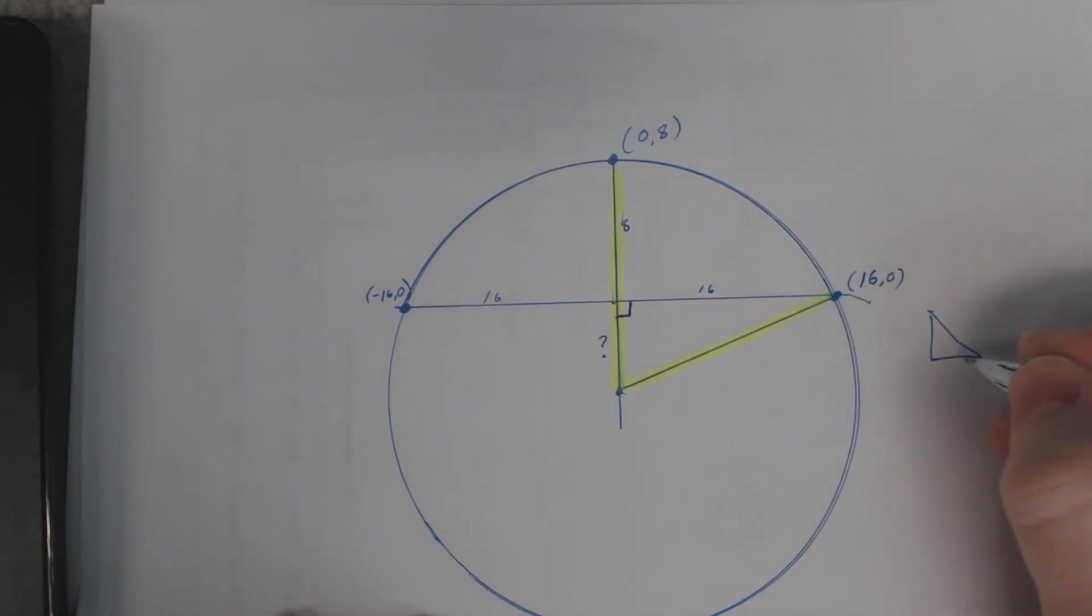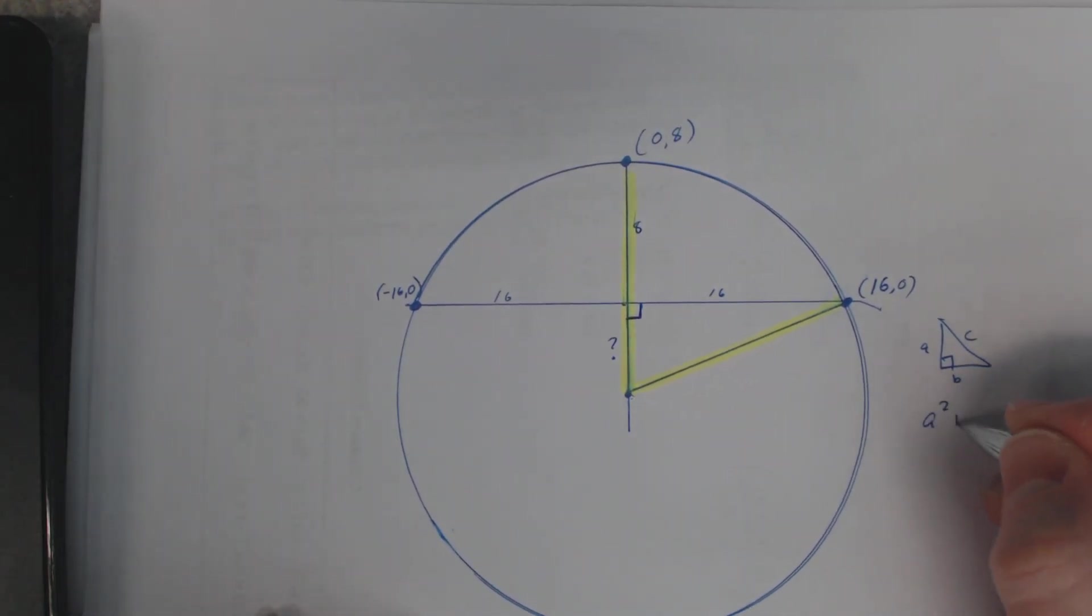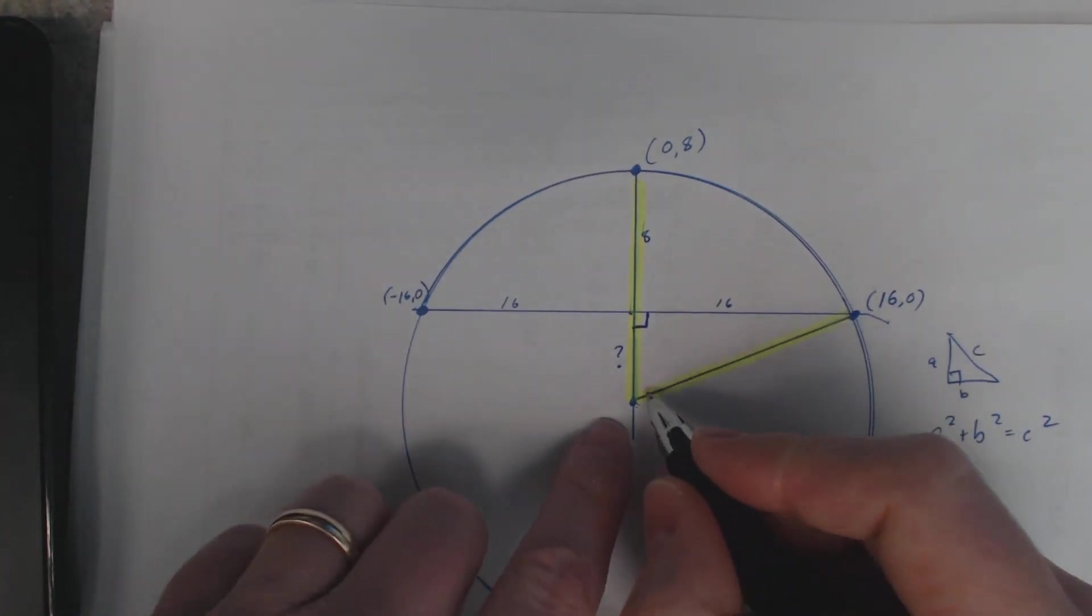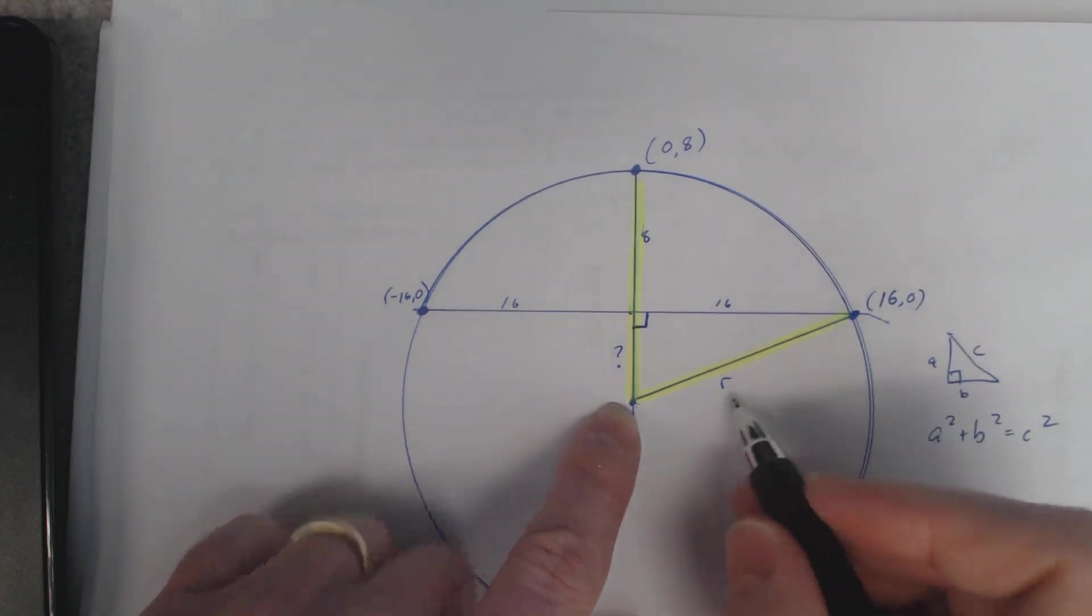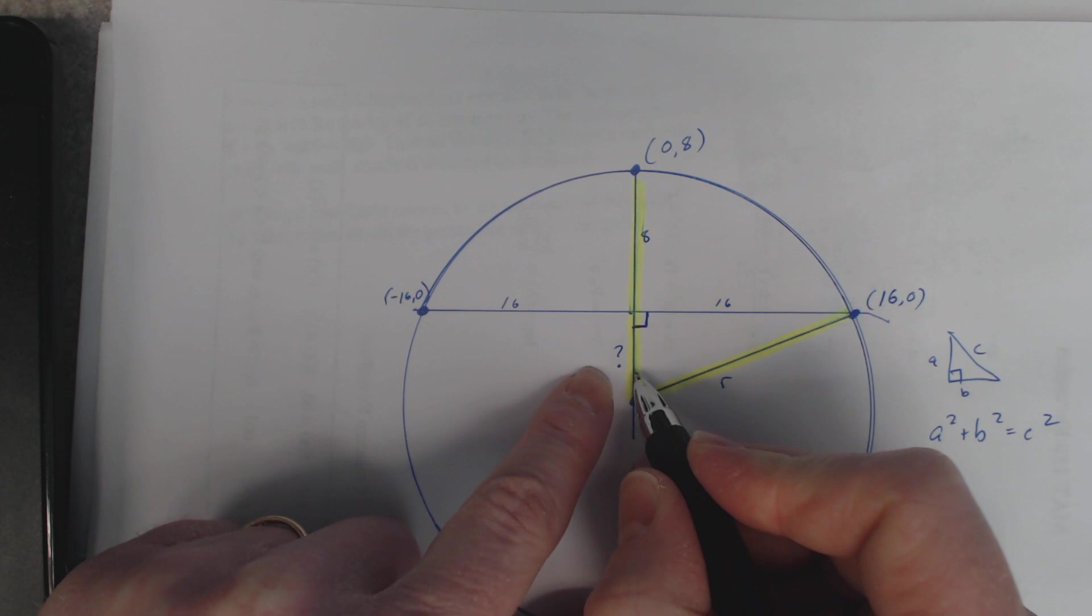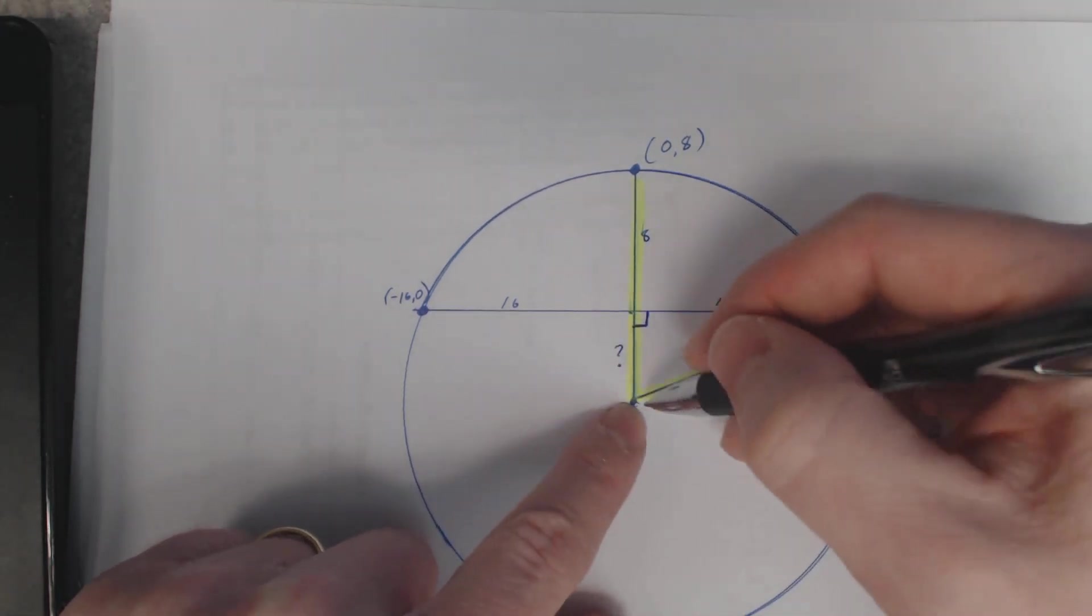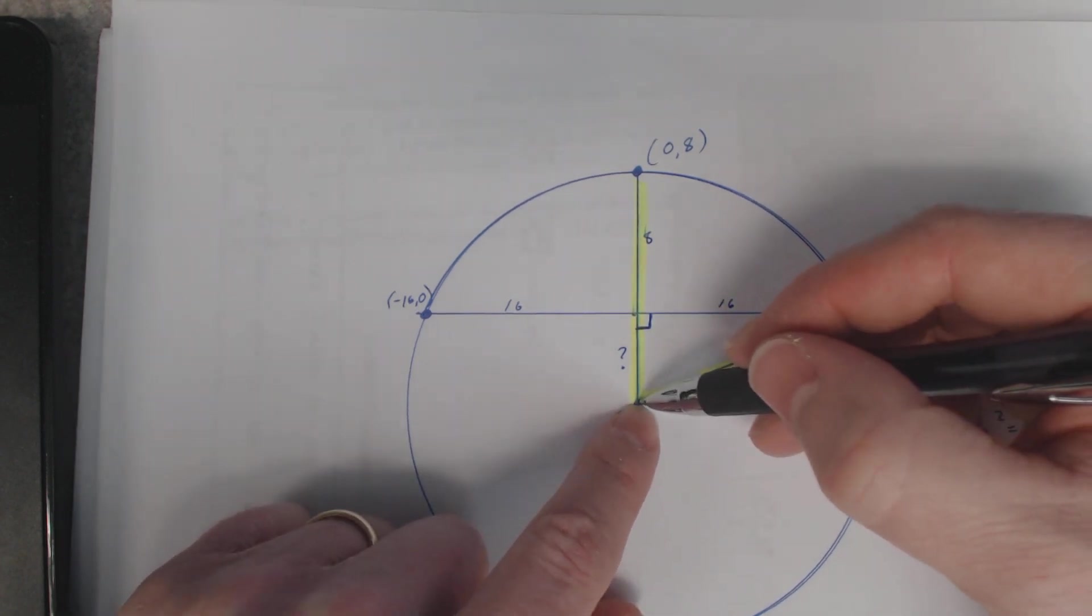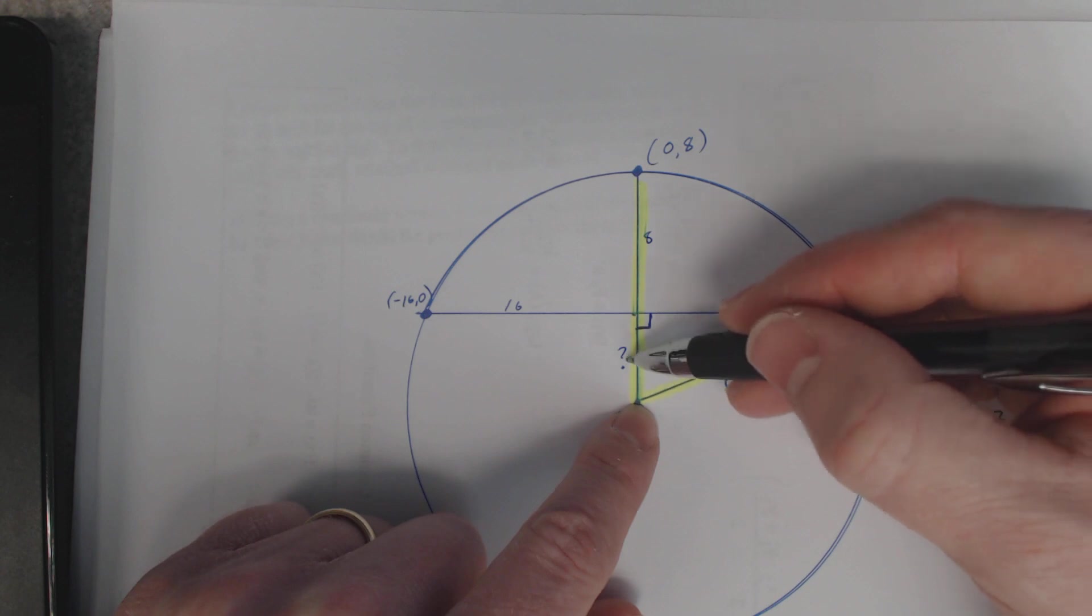So here, this radius would be the c squared, right? It's the radius that's your hypotenuse. You know this side is 16. You don't know this side, so I don't know that side. But I do know - let's think about this for a second though. The whole radius here is 8 plus this unknown value.